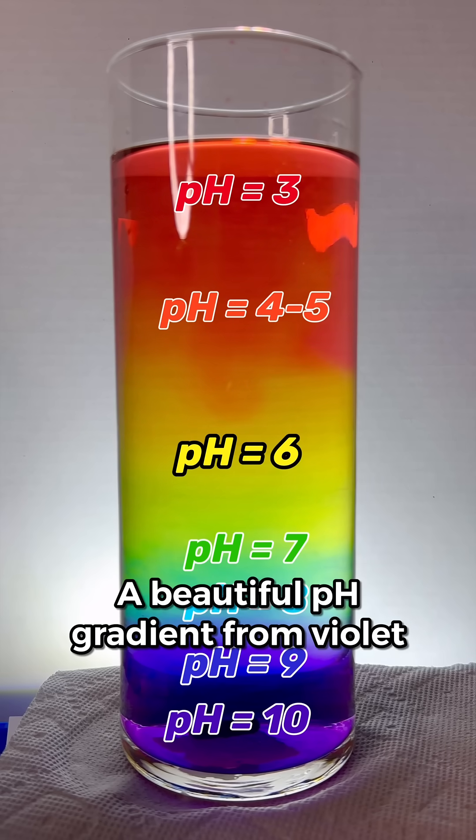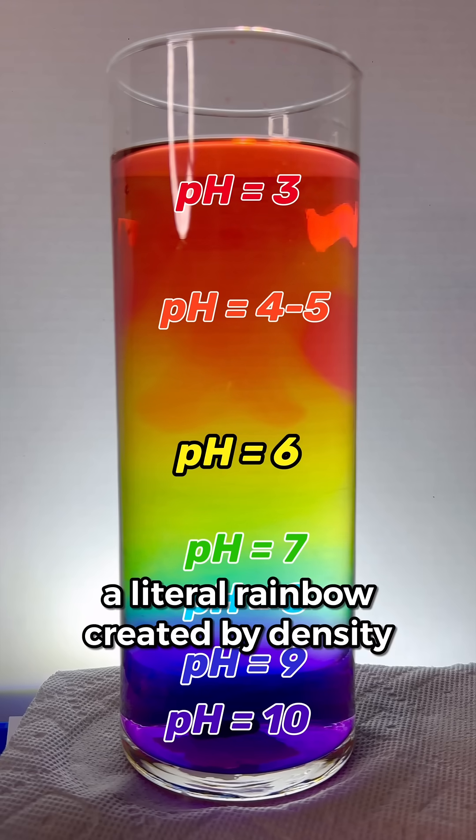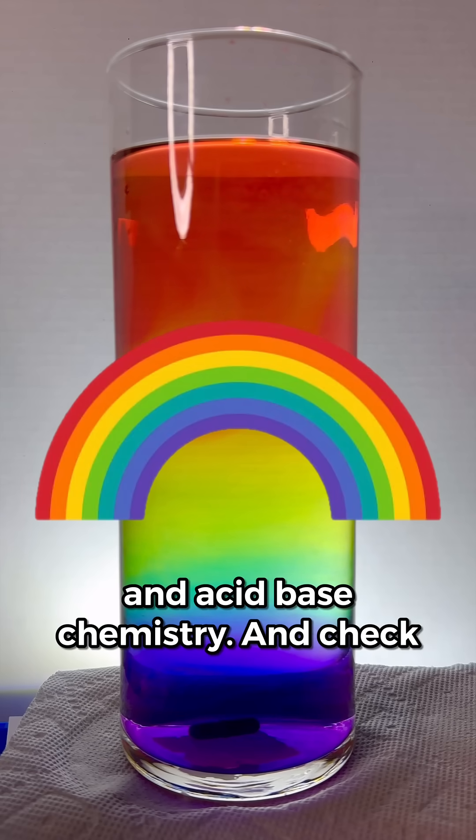The result? A beautiful pH gradient from violet on the bottom to red on top. A literal rainbow created by density and acid-base chemistry.